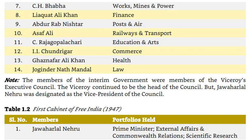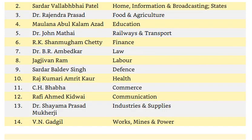Table 1.2: First Cabinet of Free India, 1947. Members and Portfolios held: 1. Jawaharlal Nehru — Prime Minister, External Affairs, Scientific Research. 2. Sardar Vallabhbhai Patel — Home, Information, States. 3. Dr. Rajendra Prasad — Food and Agriculture. 4. Maulana Abul Kalam Azad — Education. 5. Dr. John Mathai — Railways and Transport. 6. R.K. Shanmukham Chetty — Finance. 7. Dr. B.R. Ambedkar — Law. 8. Jagjeevan Ram — Labour. 9. Sardar Baldev Singh — Defence. 10. Rajkumari Amrit Kaur — Health. 11. C.H. Bhabha — Commerce. 12. Rafi Ahmed Kidwai — Communication. 13. Dr. Shyama Prasad Mukherjee — Industries and Supplies. 14. V.N. Gadgil — Works, Mines and Power.